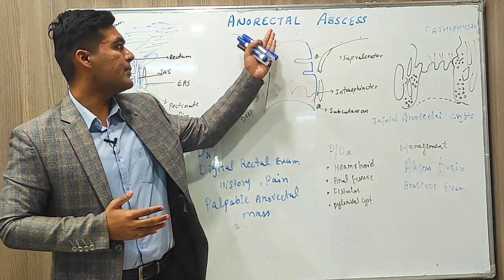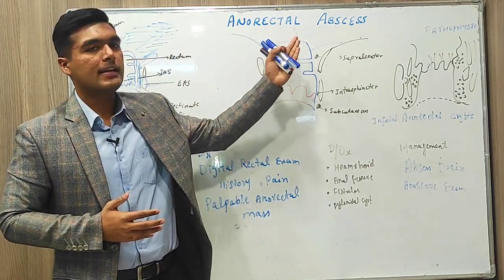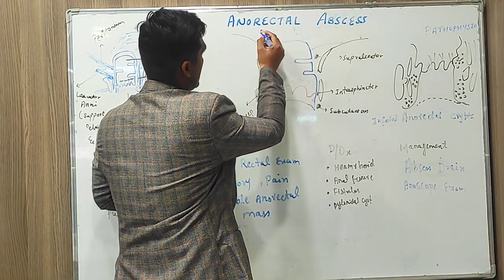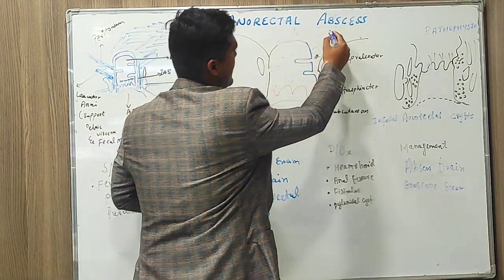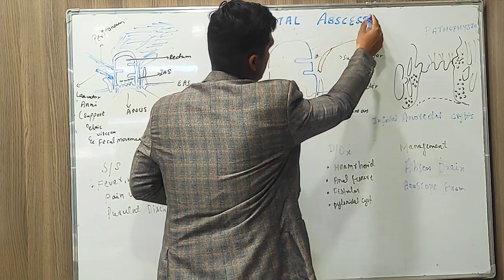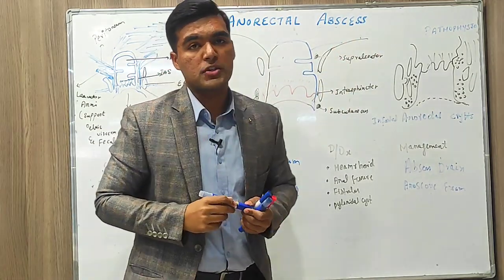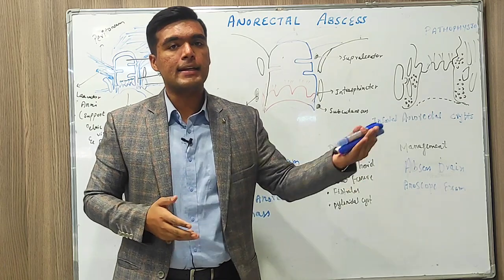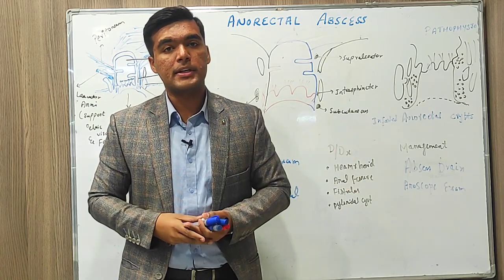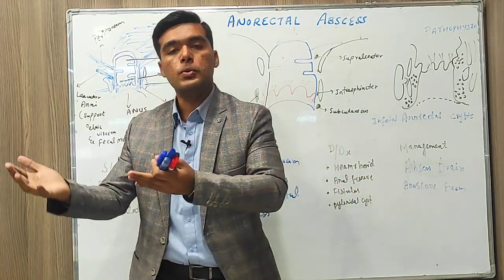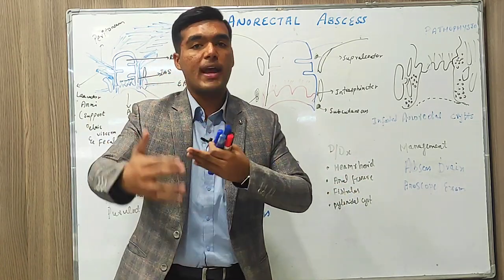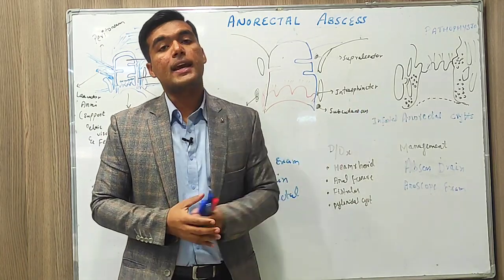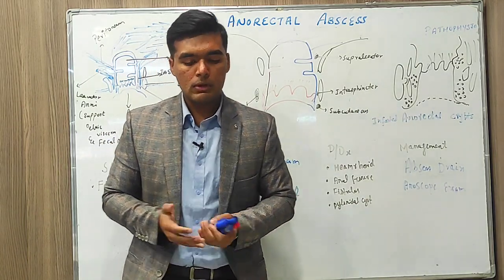Focus on this word: anorectal abscesses. Anorectal abscesses mean pus formation — formation of pus in the anorectal area. This might be due to invasion of any rectal flora, and we name it anorectal abscesses.